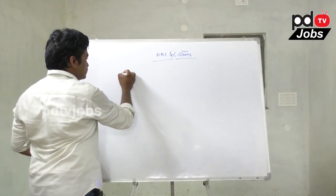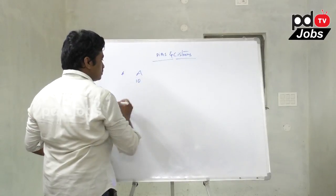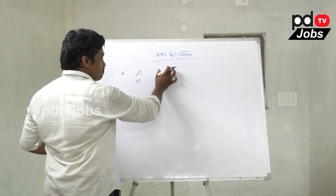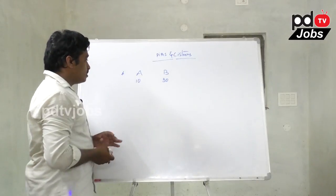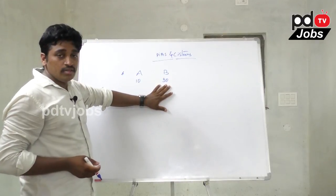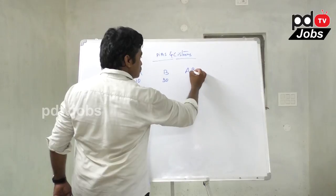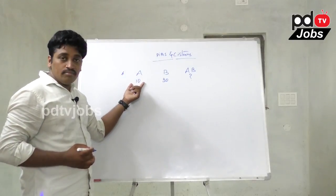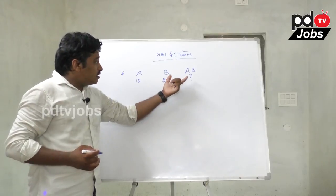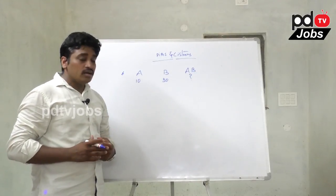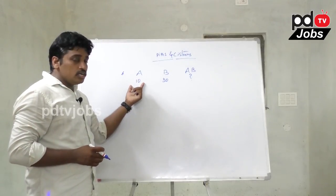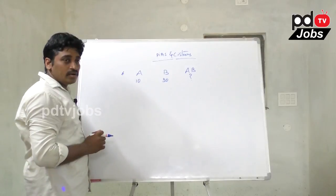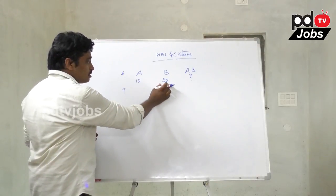Pipe A can fill a tank in 10 minutes and pipe B can fill it in 30 minutes. If they work simultaneously, how much time will it take to fill the total tank? The time given is 10 minutes and 30 minutes.